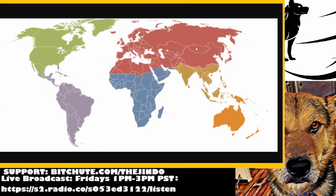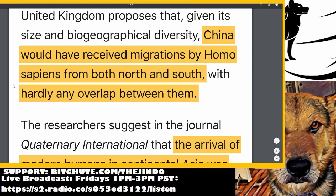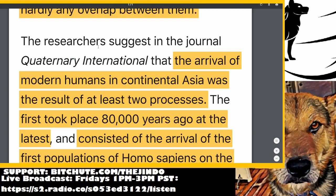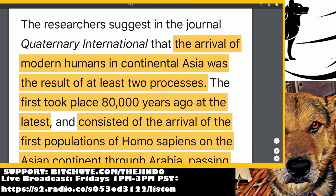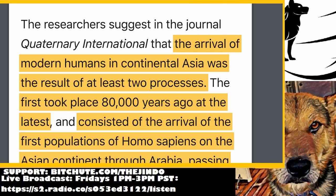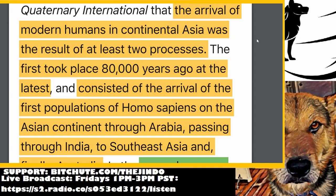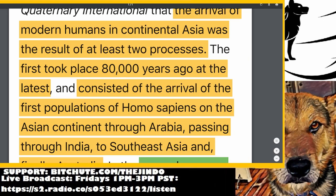The theory is that along with these organisms were people — different types of human beings, not just modern humans, but Erectus, Neanderthals, and other hitherto unknown humans. The theory is that there were two different populations that came into China in the late Pleistocene. According to this article, China would have received migrations by Homo sapiens from both North and South with hardly any overlap between them. The researchers are basically saying that the arrival of modern humans in continental Asia was a result of at least two processes — two separate populations.